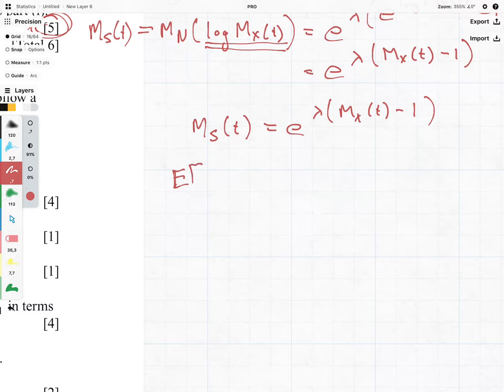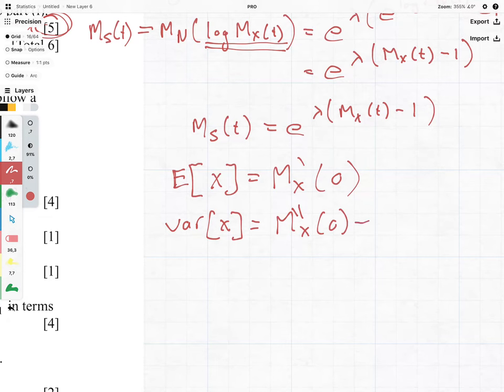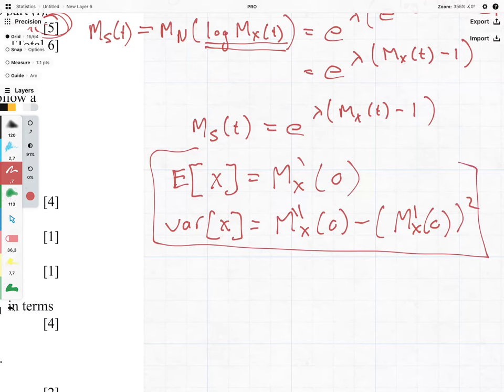We know that the expected value of something is equal to the first derivative of the moment generating function set to zero. And we know that the variance of this is equal to the second derivative at zero minus the first derivative at zero squared. So we need to bear that in mind while we now come to the second part of the question.